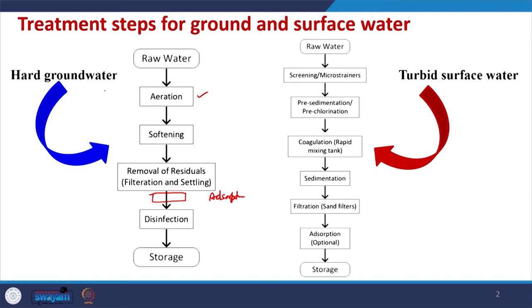If the water is surface water and it is turbid - which is highly possible during rainy season - it will contain a lot of sediments that have to be removed. First we screen the water to remove the maximum amount of suspended material. Then some pre-sedimentation and chlorination may be done to settle out most of the settleable solids. For removing dissolved solids and remaining suspended solids not getting settled easily, we use coagulation and flocculation methods, followed by sedimentation.